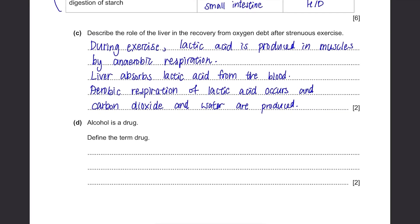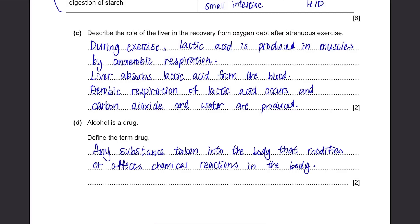Part D: Alcohol is a drug. Define the term drug. This is an important definition to memorize. A drug is any substance taken into the body that modifies the chemical reactions in the body.